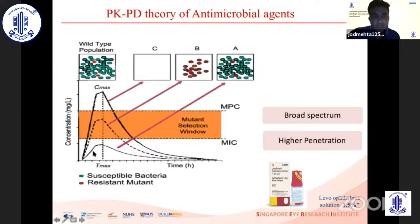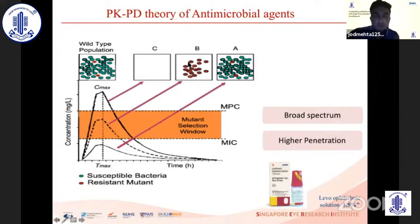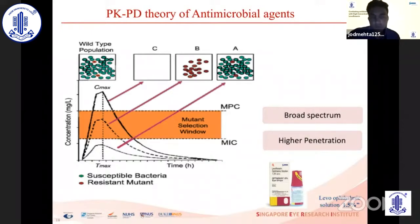If the antibiotic is below the MIC, the bacterial population grows quite well. When you are above the MIC but below the MPC — the mutant prevention concentration — your antibiotic is killing the sensitive bacteria, but the resistant organism remains because you're below this threshold. If it is possible to go above this threshold, you can basically clear everything. You need an antibiotic with high penetration in the target tissue and ideally broad-spectrum activity, so it has this effect on multiple different organisms.